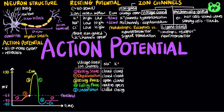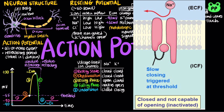During the refractory period after an action potential, a second action potential cannot be initiated. This ensures that an impulse moves along the axon in one direction only. There are two types of refractory periods. The absolute refractory period corresponds to depolarization and repolarization. It is the interval of time during which a second action potential cannot be initiated, no matter how large a stimulus is applied. The relative refractory period corresponds to hyperpolarization, and it is the interval of time in which a second action potential can be initiated, but the initiation will require a greater stimulus than before. Refractory periods are caused by the inactivation gate of sodium channels; once inactivated, the sodium channels cannot respond to another stimulus until the gates are reset.